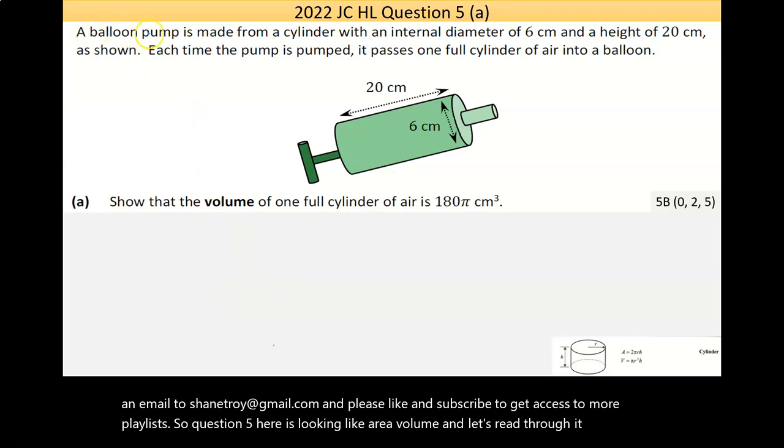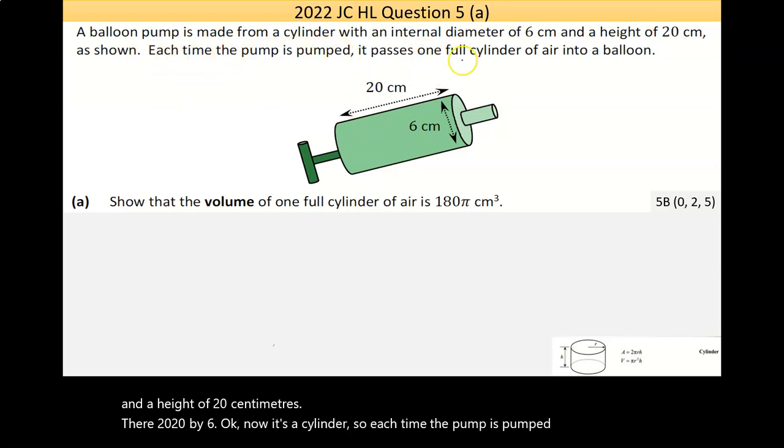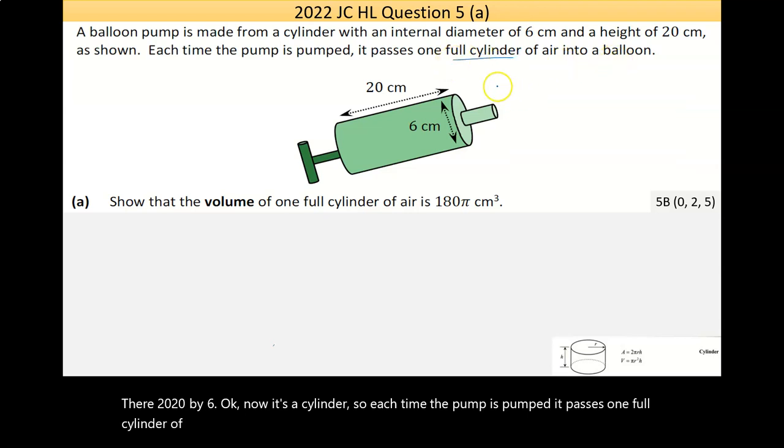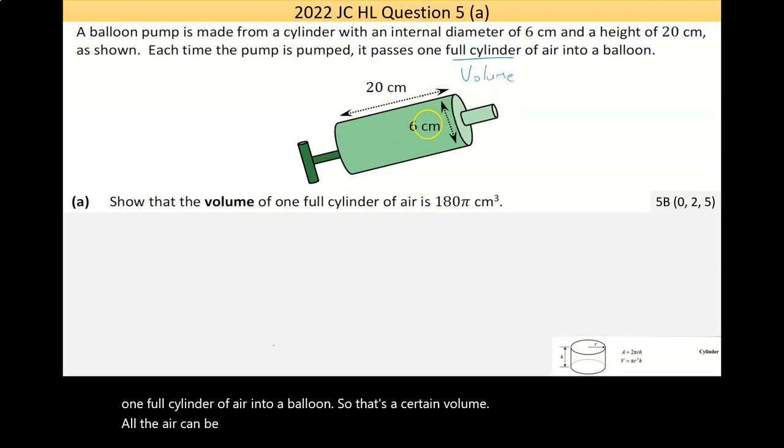It says a balloon pump is made from a cylinder with an internal diameter of 6 centimeters and a height of 20 centimeters. You see there, 20 by 6. Each time the pump is pumped, it passes one full cylinder of air into a balloon. So that's a certain volume of air can be pumped each press.